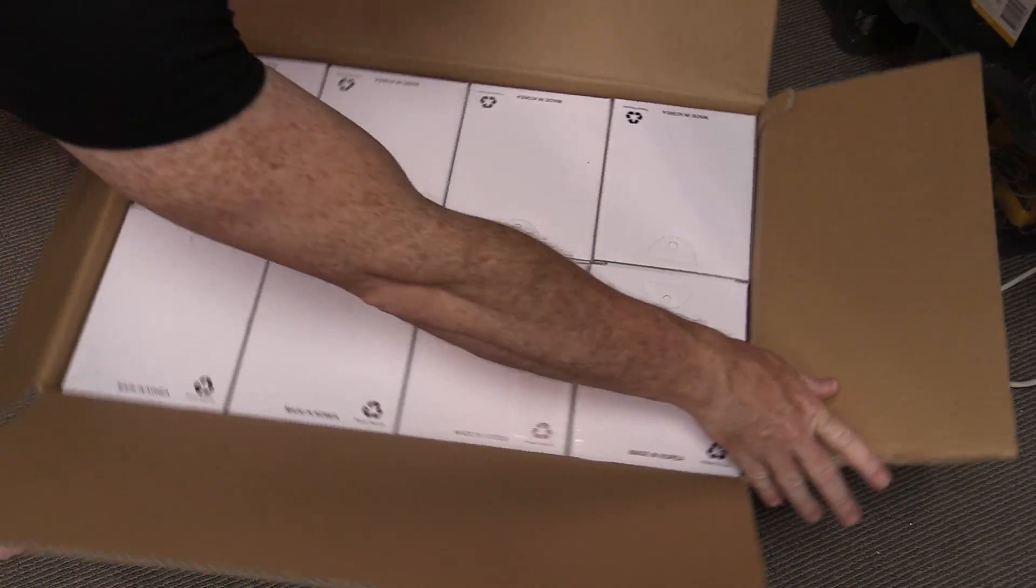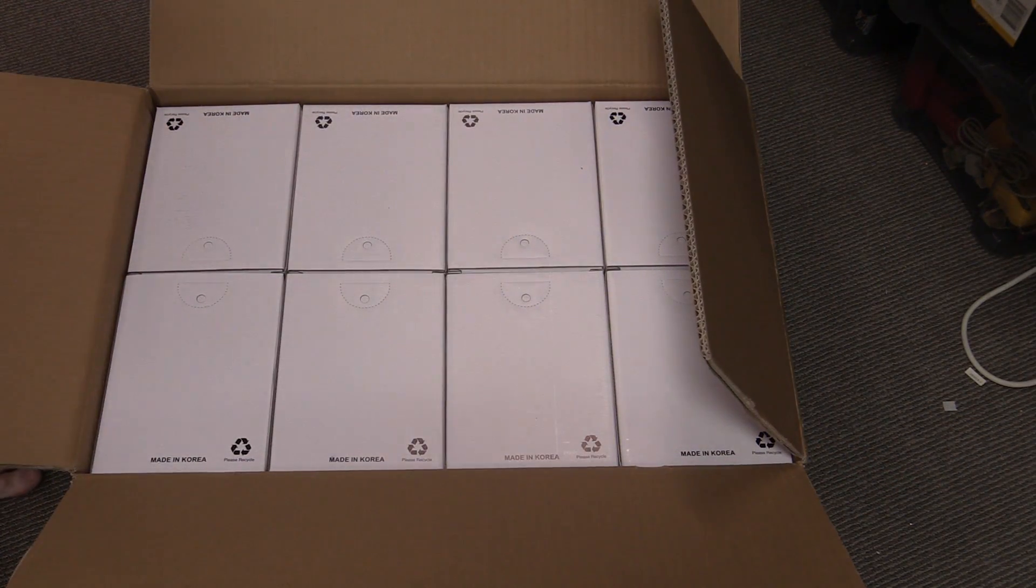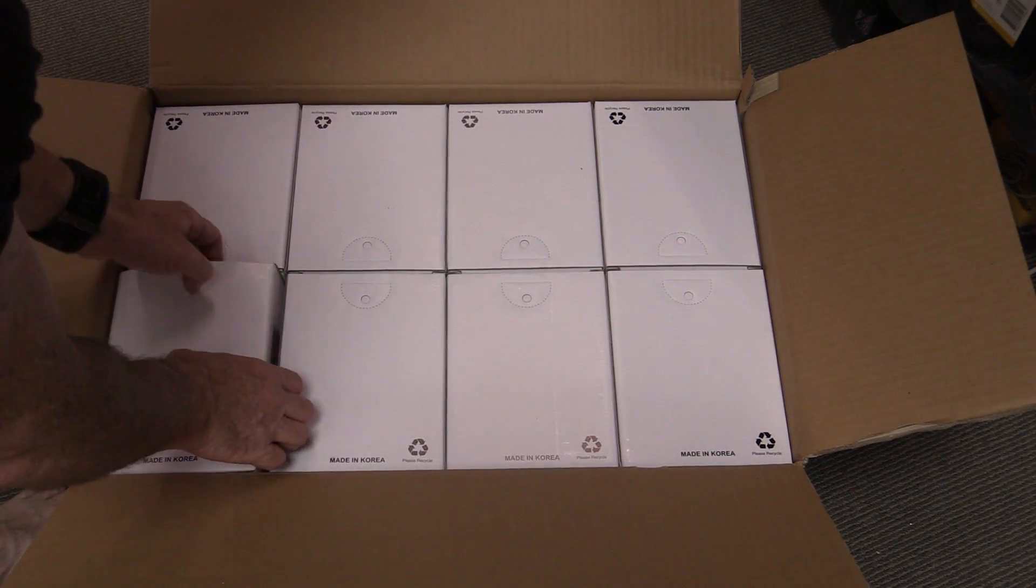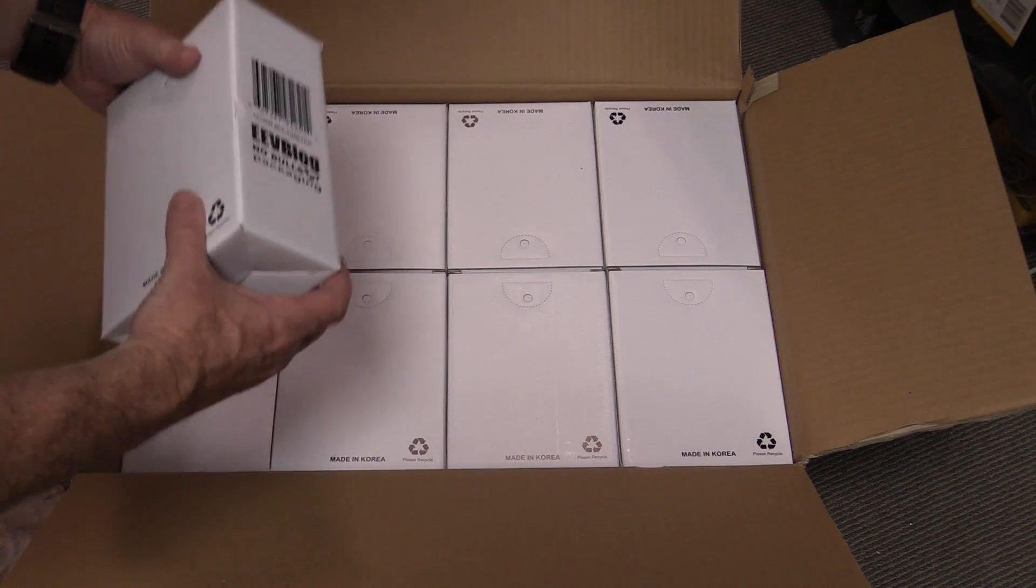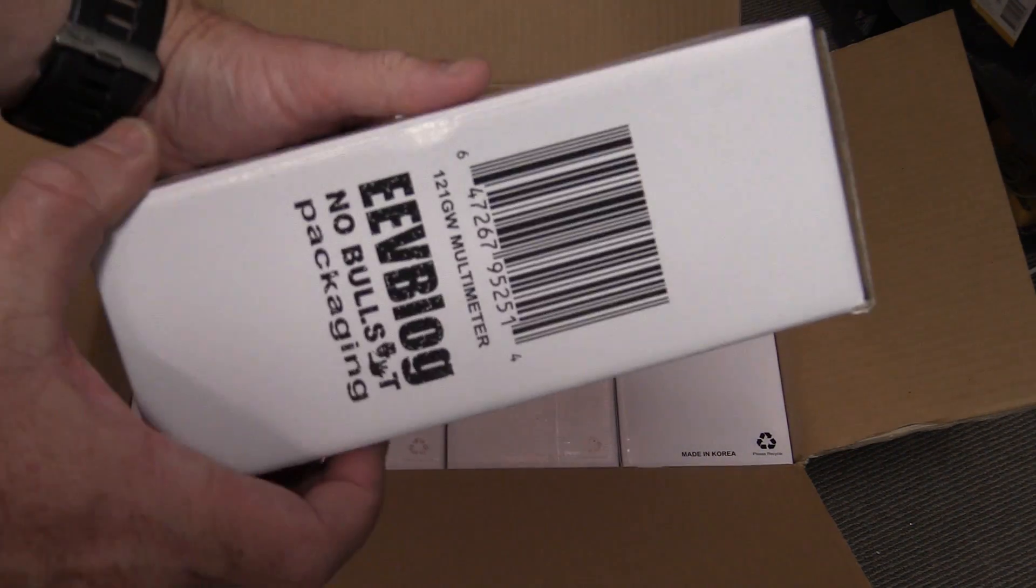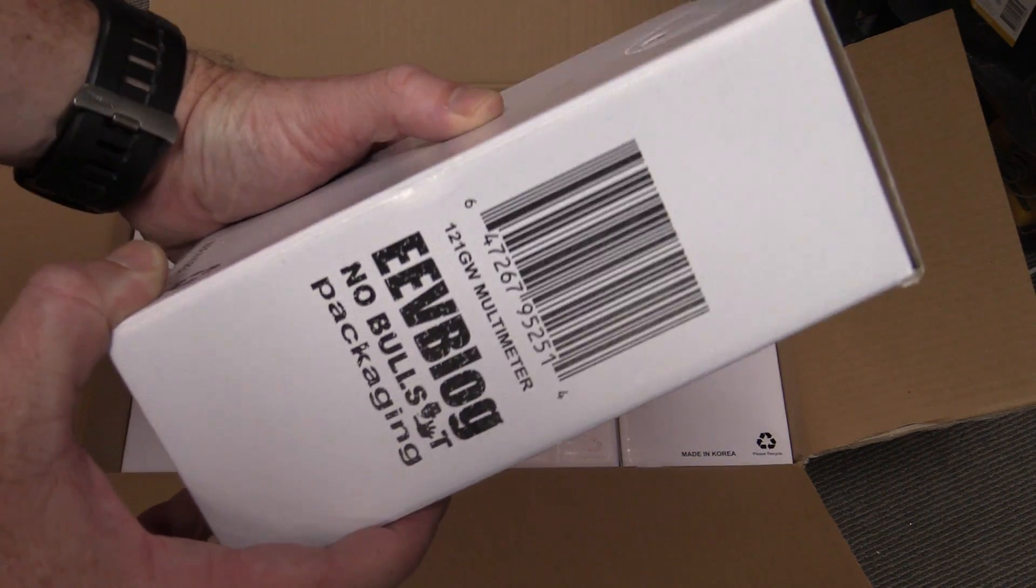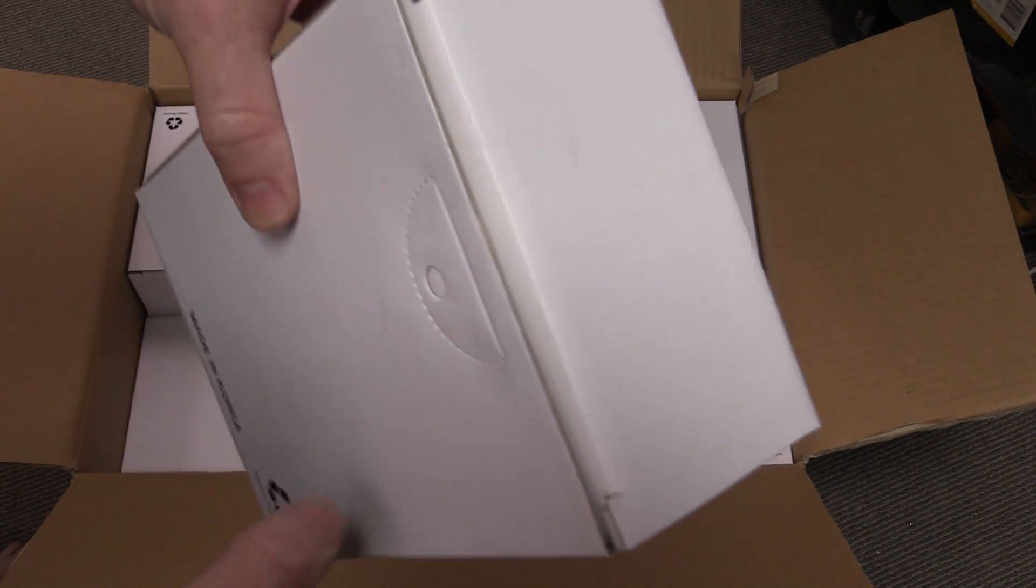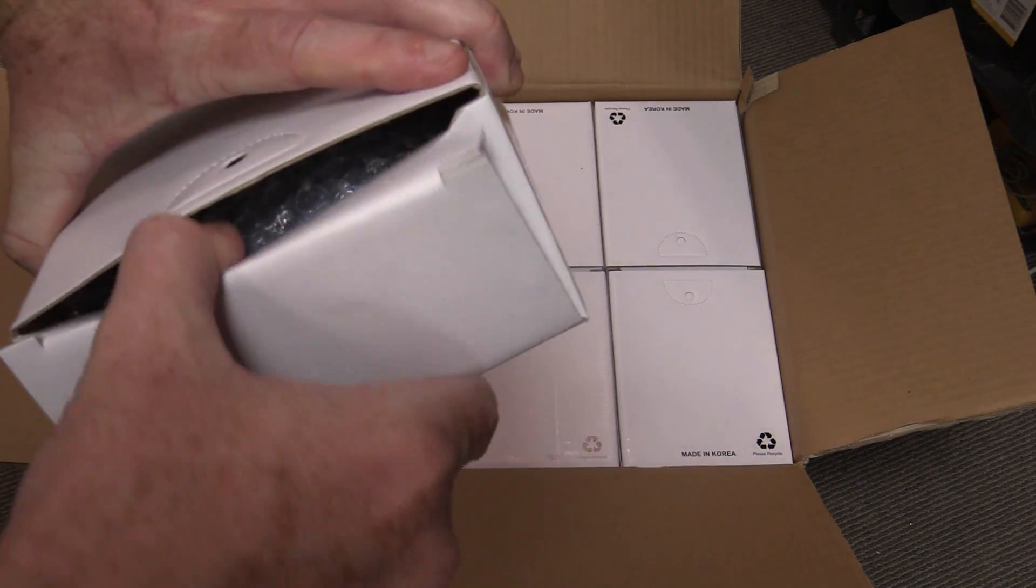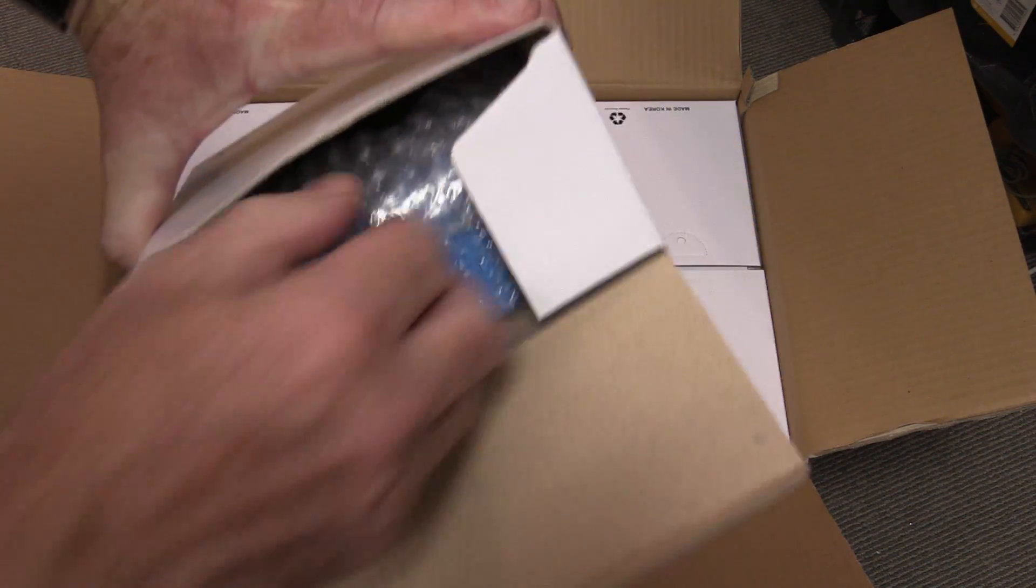Here we go. This is actually the first time I have gotten more than like one or two production or pre-prototype units, and it's the first time I've seen the box and everything finished. There it is, Made in Korea. The EEVblog no bullshit packaging for the 121GW Multimeter. It's got a little product hanger on it. Didn't know about that.